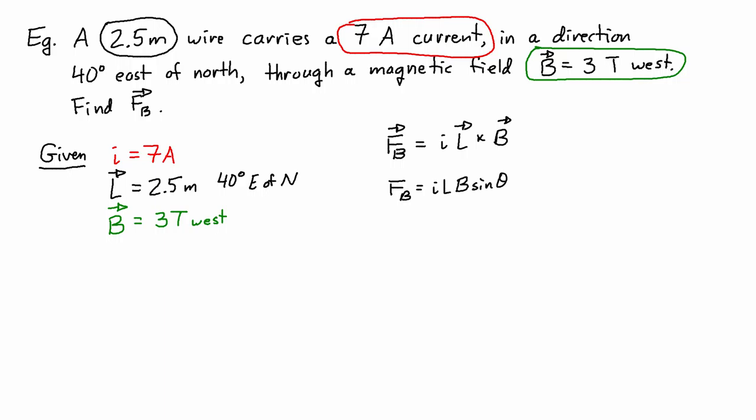Looking at the first one, F_B is equal to IL cross B. I have the L vector, I have the B vector, but it's not immediately obvious how to set up that cross product. And as with all physics problems, I really need to do a sketch for this.